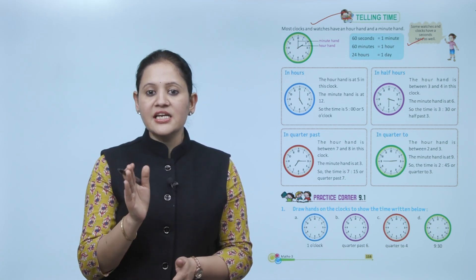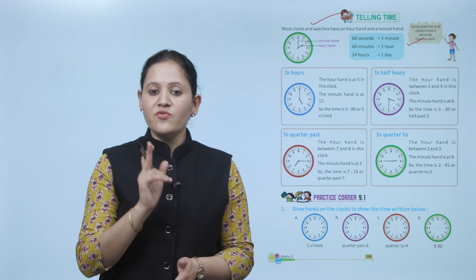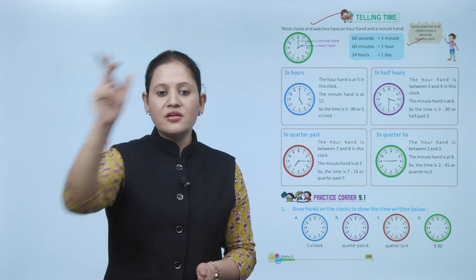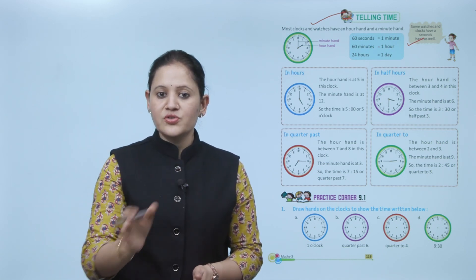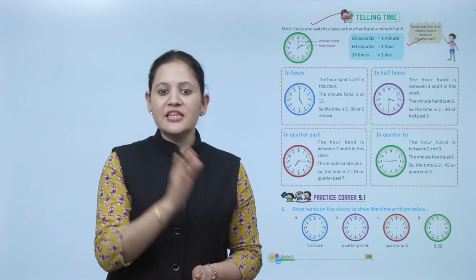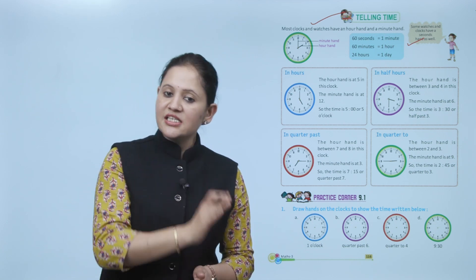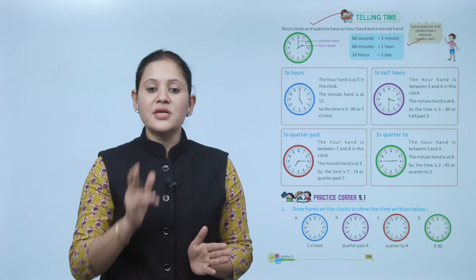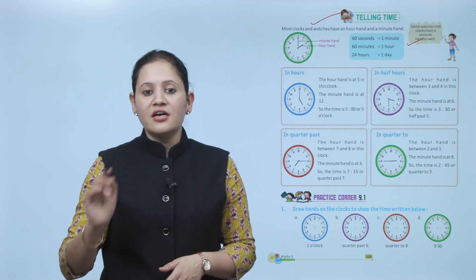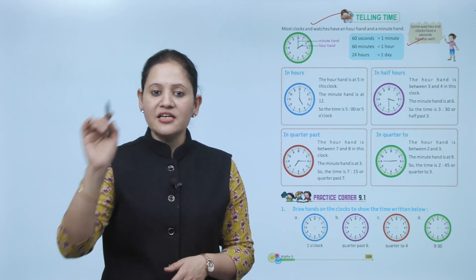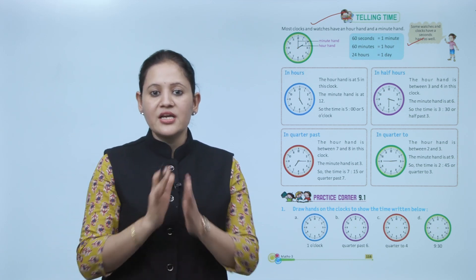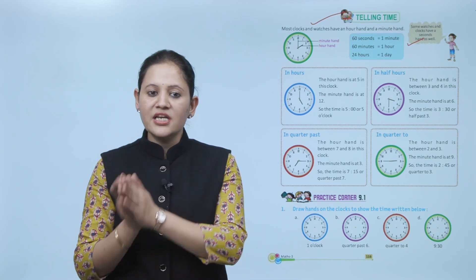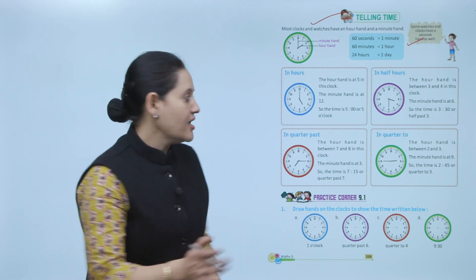60 seconds equals 1 minute, which means the second hand completes one full round of the clock in 1 minute. 60 minutes equals 1 hour, meaning in 1 hour the minute hand completes one round of the clock. 24 hours equals 1 day.